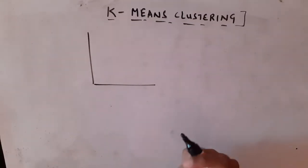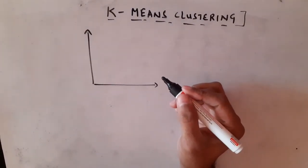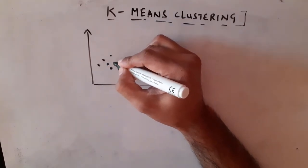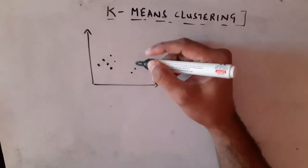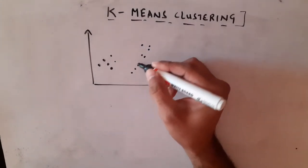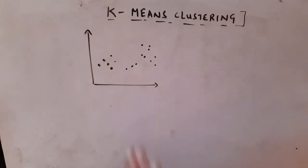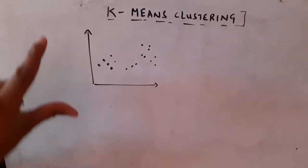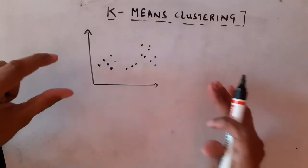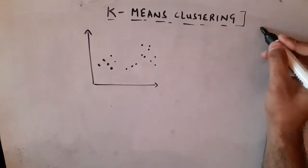Assume this is a scatter plot and my data points are appearing on it — I'm placing some points on a random basis. I have two-dimensional data. The key steps involve K-means clustering, where K represents the number of clusters we want to create.